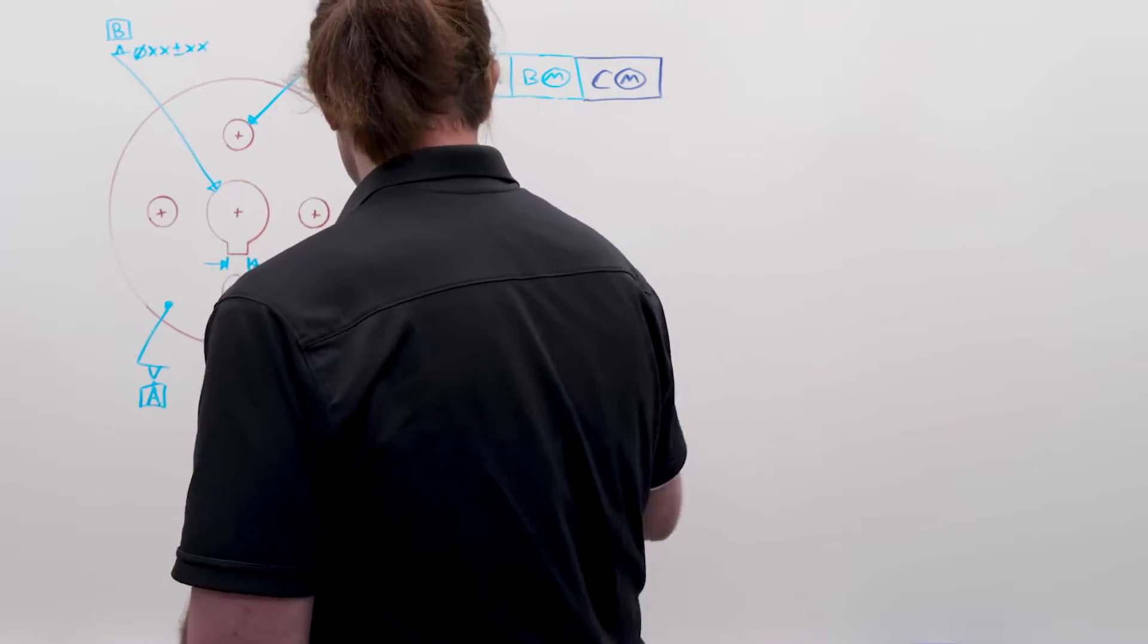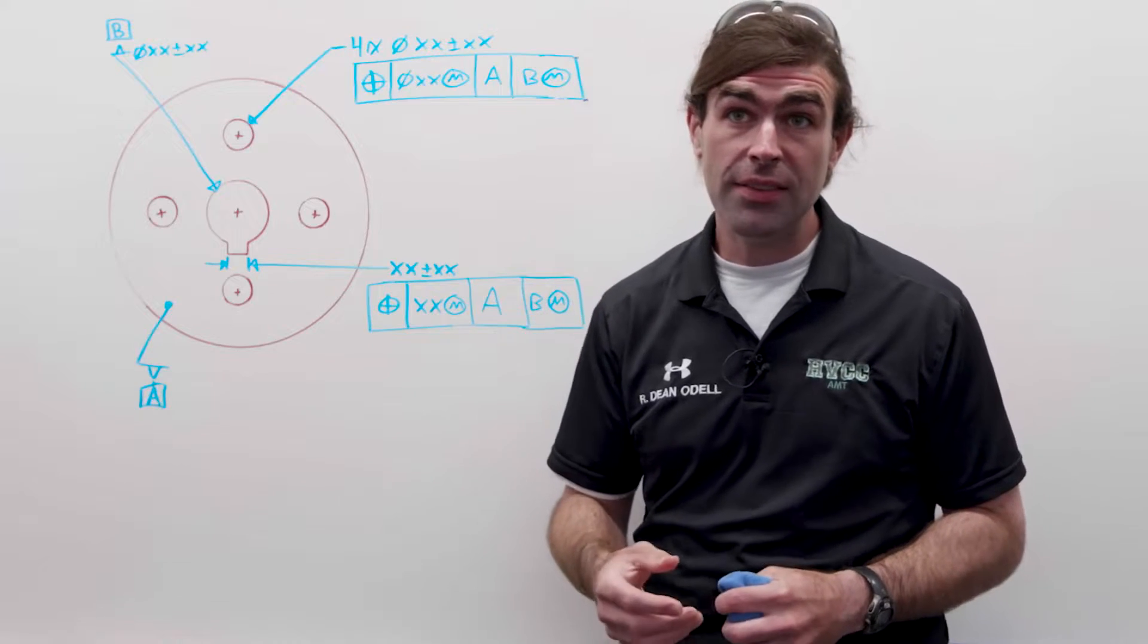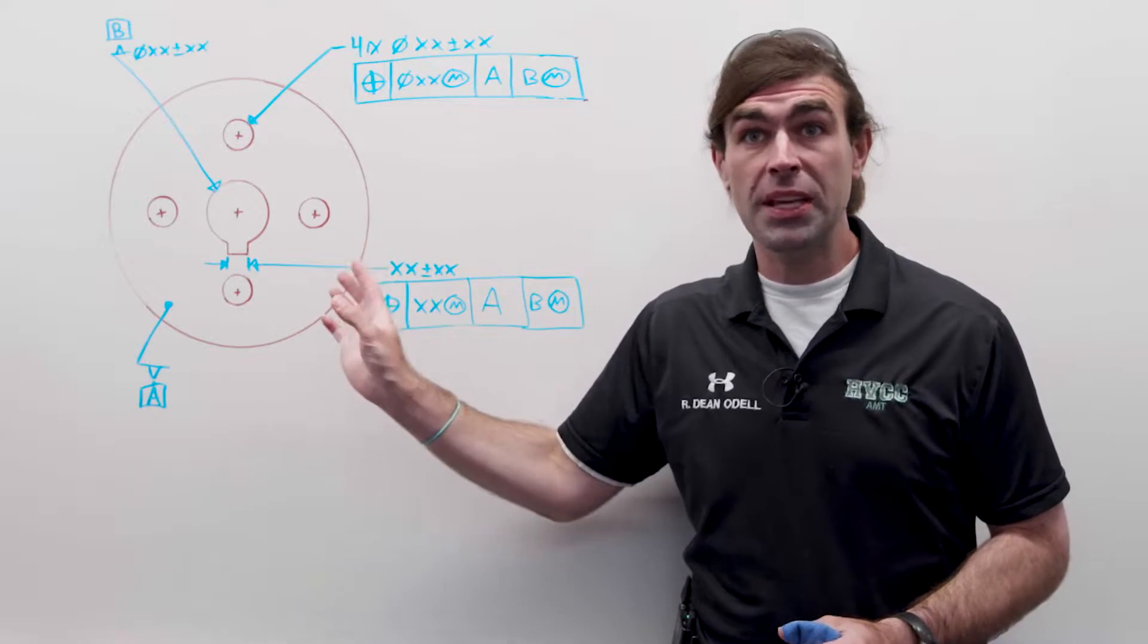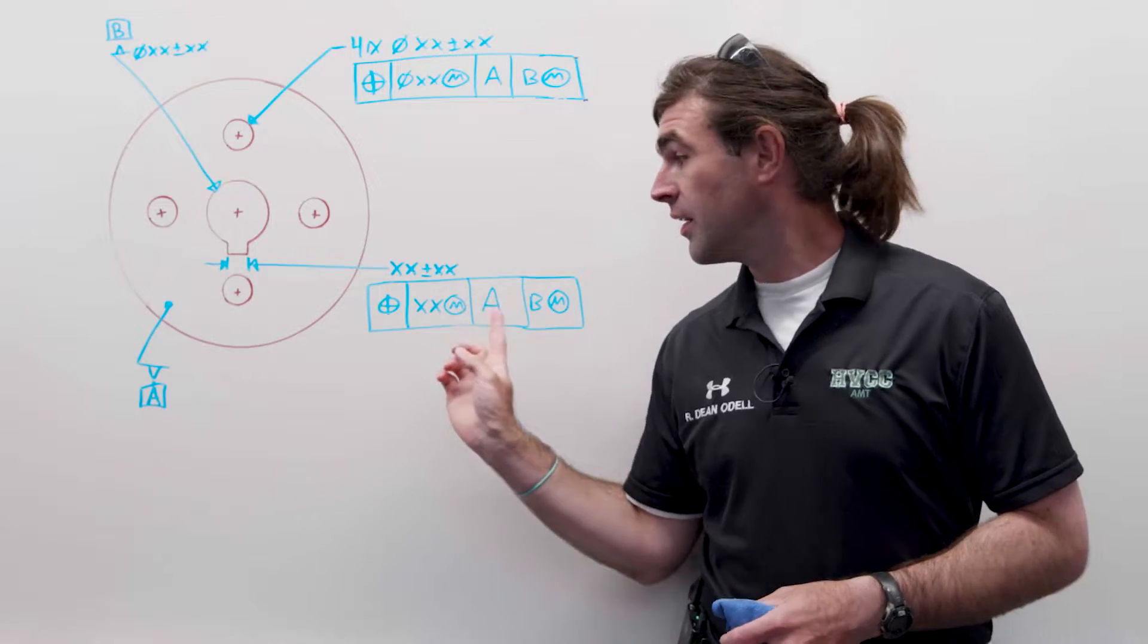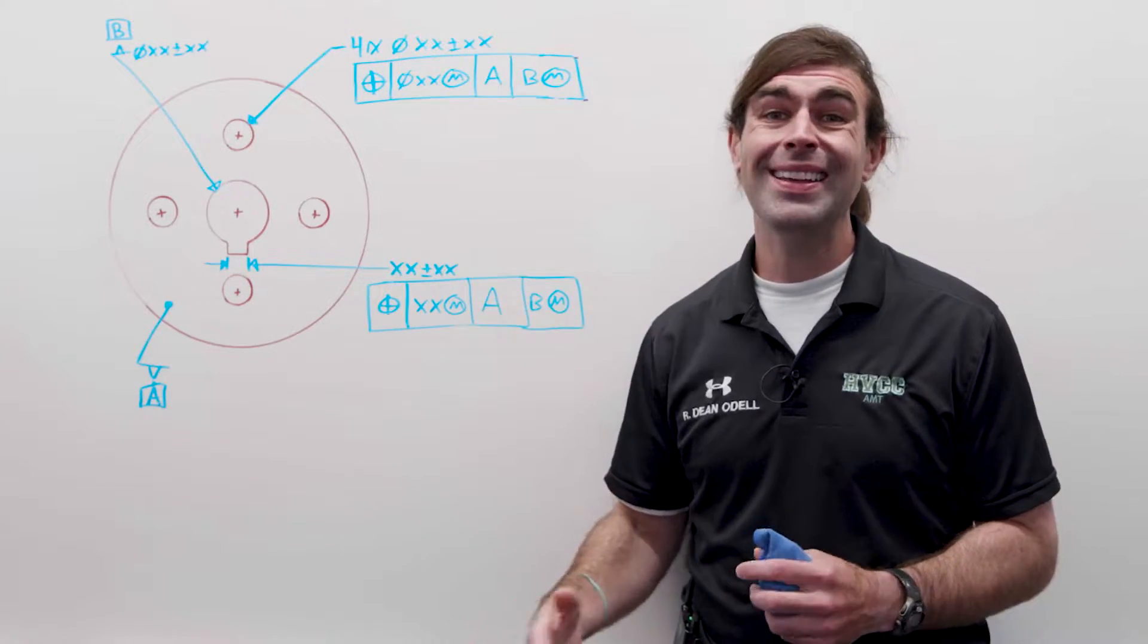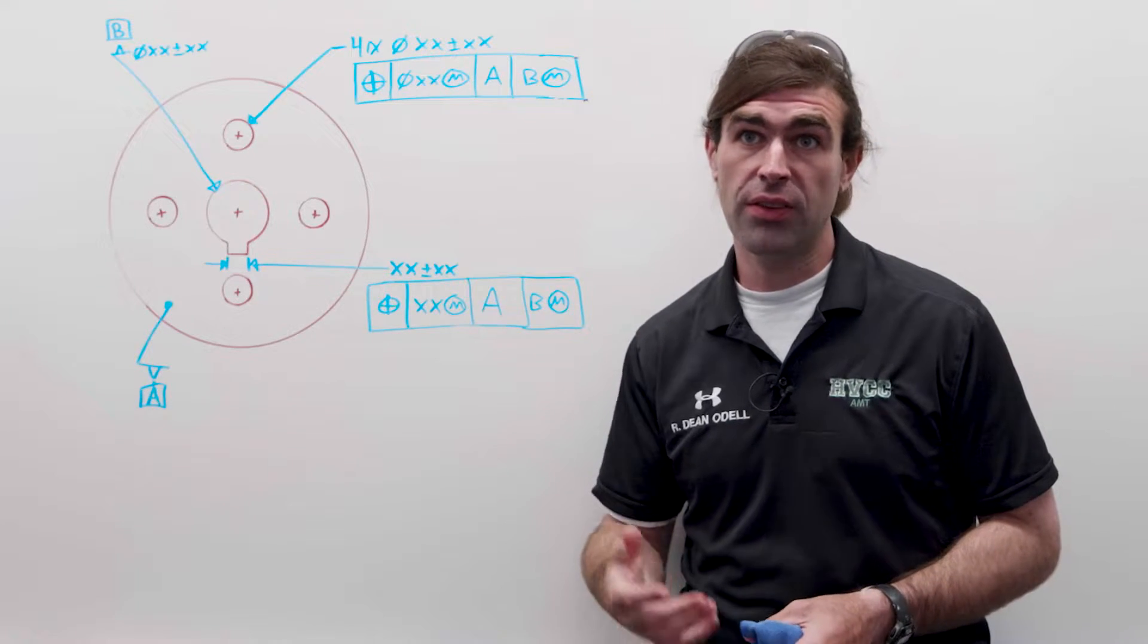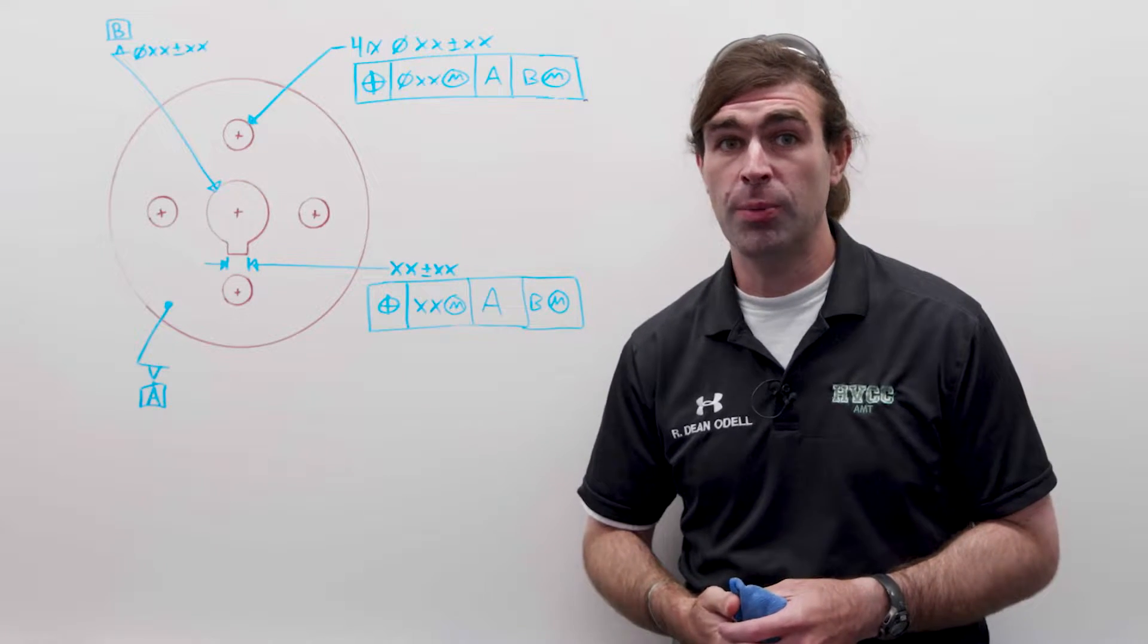So what that means is that this means the same thing as the previous version with datum C because same datums, same order, same material conditions. It's A and then B at MMC.